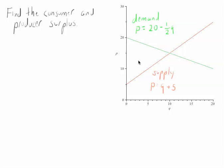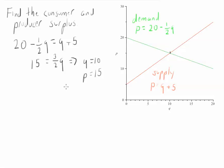So the first thing we need to do is we need to find the equilibrium price and quantity. In other words, we need to find that point. So that means we need to set demand and supply equal to each other. So this is 15 equals 3 halves Q. This means Q equals 10. And you can check P equals 15.